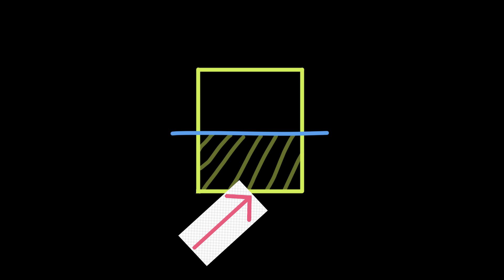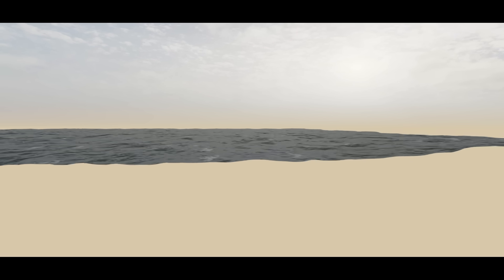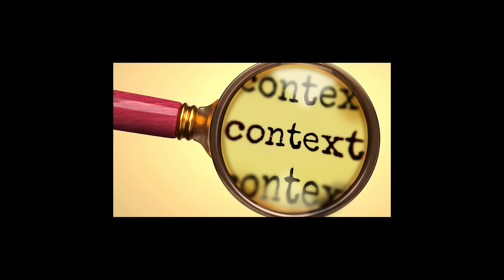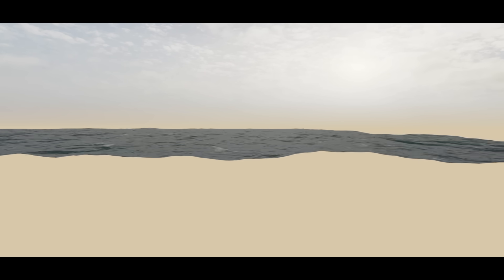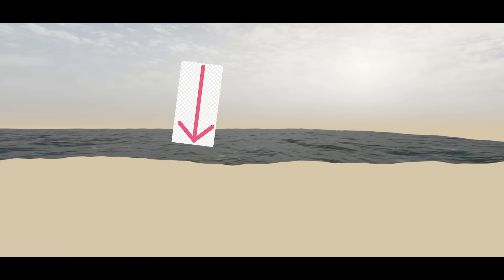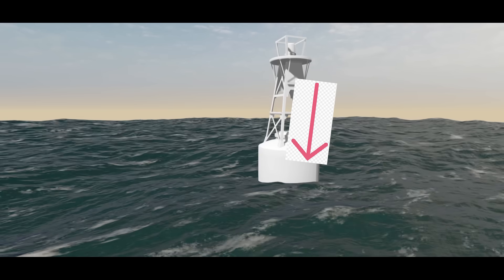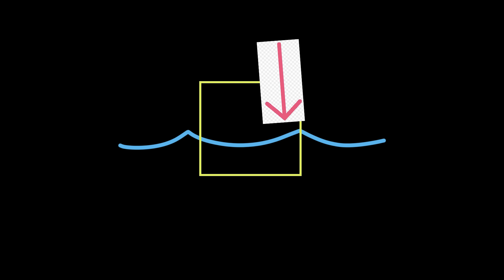Another big issue with our buoyancy is that it only moves up and down, but in the real world objects can rotate and be pushed around by the current. At the moment, we are assuming our water height is at the same level for every point of contact on our buoy, which would be correct if our water was a flat plane. Obviously, our water is not a flat plane. The height of the water varies quite a lot over time and space, including the space that our buoy occupies. Some parts of the object are going to be displacing more water than others, meaning certain areas will experience a stronger upwards force, resulting in the object tipping towards the smaller force.